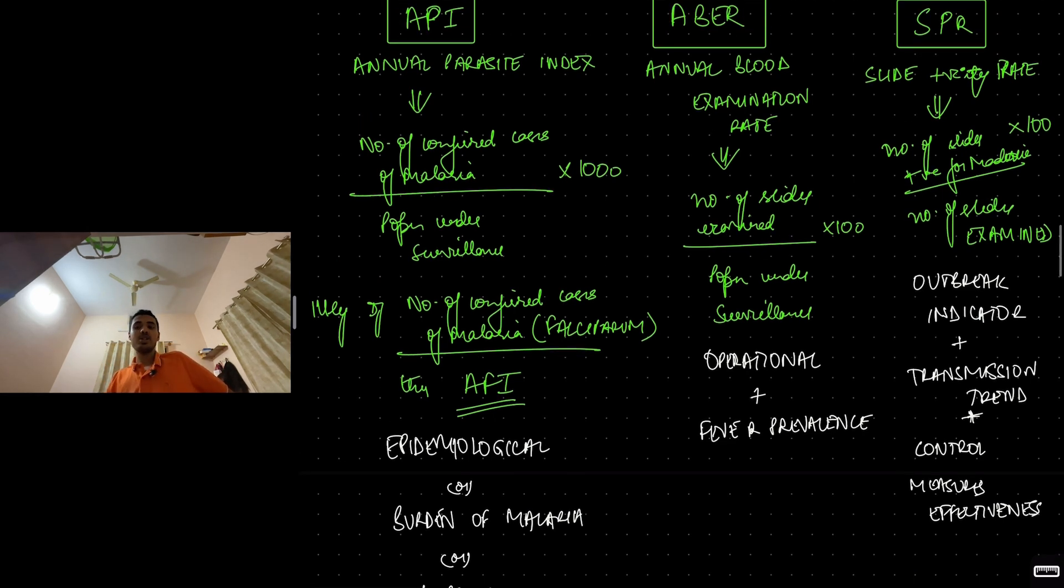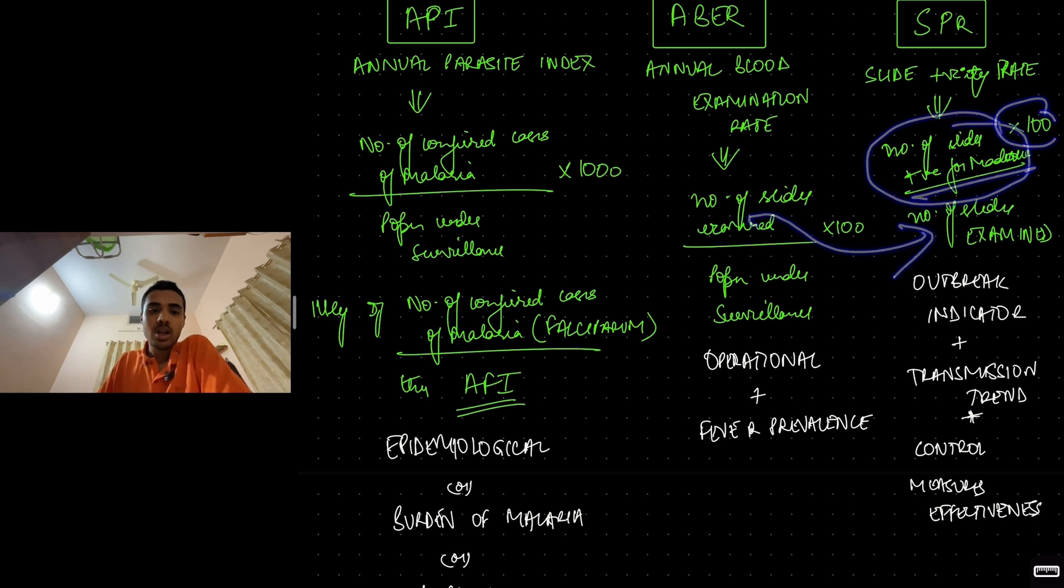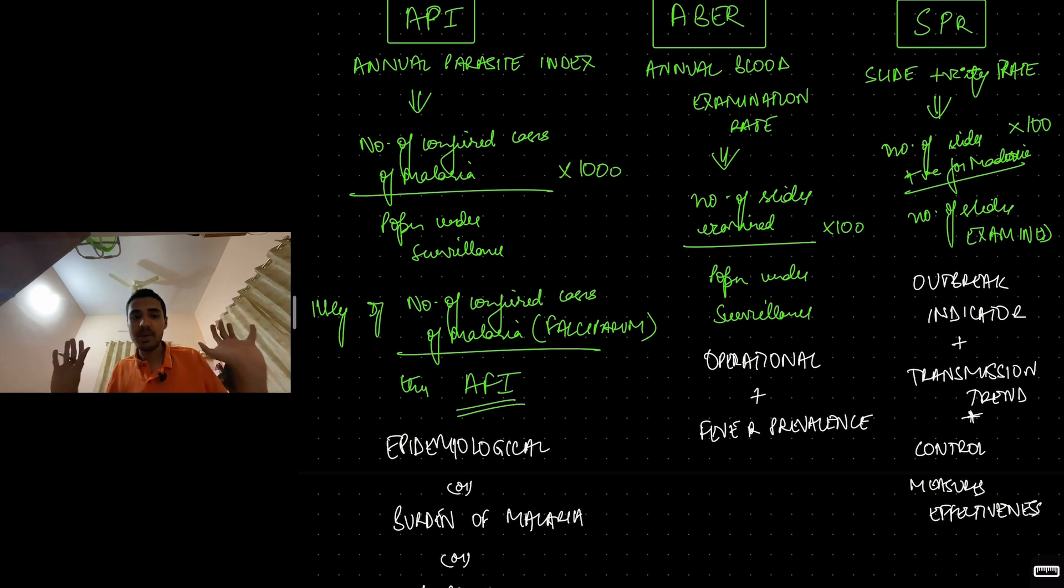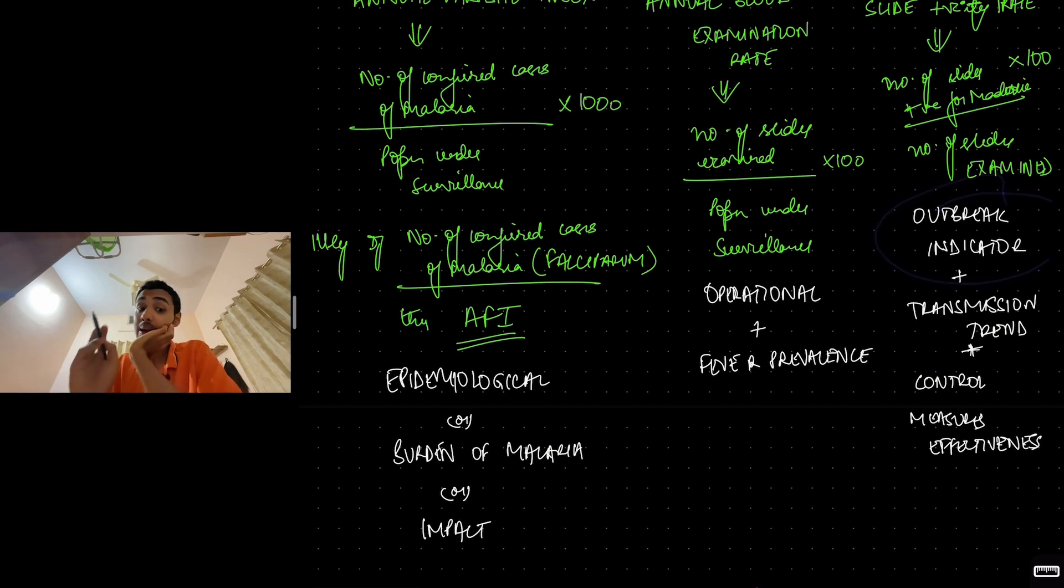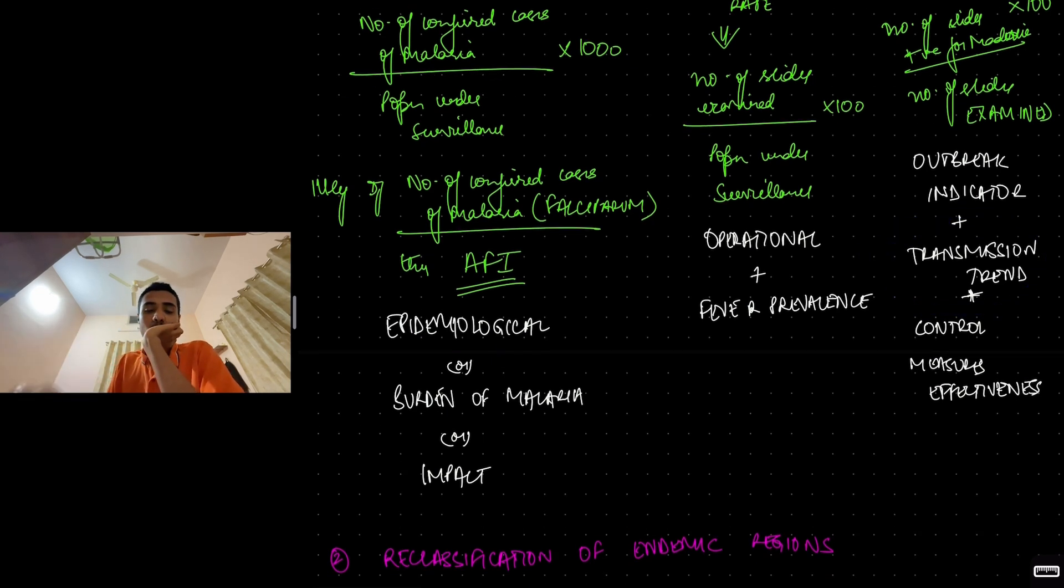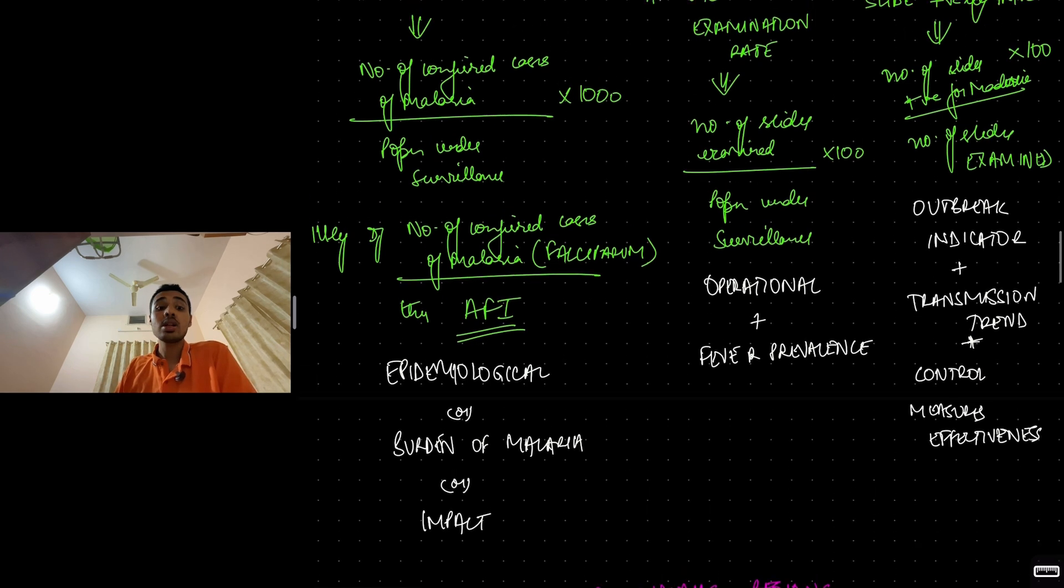Slide positivity rate SPR. This is number of slides positive for malaria divided by number of slides examined into 100. Out of the slides I have examined, how many have come positive for malaria? More positive it is for malaria, that says that every single fever case is malaria now. So it is an outbreak indicator. It is telling that impending outbreak is there. It is telling us disease is getting transmitted. So it tells us the transmission trends. It also tells us the effectiveness of control measures. If the control measures are effective, then slide positivity rate will be low.